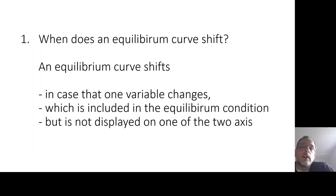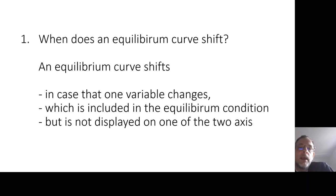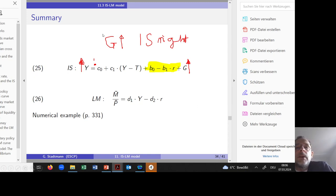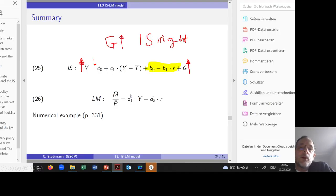I would like to give a general rule: an equilibrium curve shifts when a variable changes that is included in the equilibrium condition but is not displayed on one of the two axes. This definition holds in every model — in microeconomics, macroeconomics, and finance. For example, if the government increases government spending G, we check whether G is in the LM equation. It is not, so the LM curve does not shift.